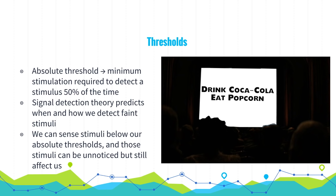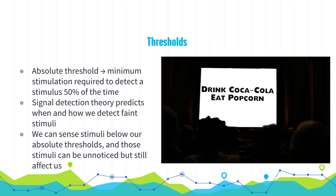There's also the idea of subliminal stimuli — stimuli that are below our absolute threshold for conscious awareness, but that we can still sense. We can sense stimuli below our absolute thresholds, and while they're unnoticed, they can still affect us. For example, a message flashed during a movie can affect us even though we don't consciously register it. However, advertisers cannot manipulate us with hidden persuasion through subliminal stimuli. The key idea is that we automatically process much of our information outside of conscious awareness.